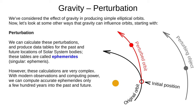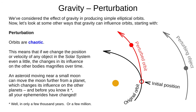We can calculate these perturbations and produce data tables for the past and future locations of solar system objects. These tables are called ephemerides — the singular is ephemeris, from the Latin for diary. These calculations are extremely complex, and with modern observations and computing power, we can only make accurate ephemerides for a few centuries into the past and future. And orbits are chaotic — if we change the position or velocity of any object in the solar system, even a little, the changes in its influence on the other bodies magnify over time. An asteroid moving near a small moon might move the moon further from its planet, which changes its influence on other planets, and before you know it, all your ephemerides have changed.